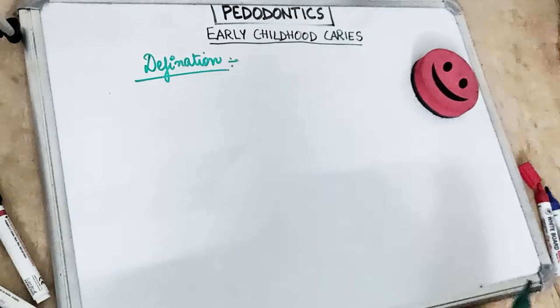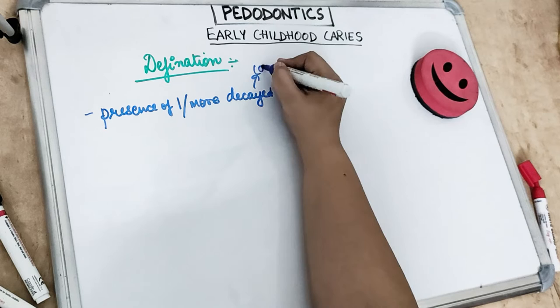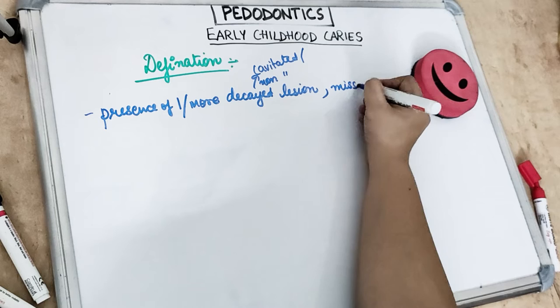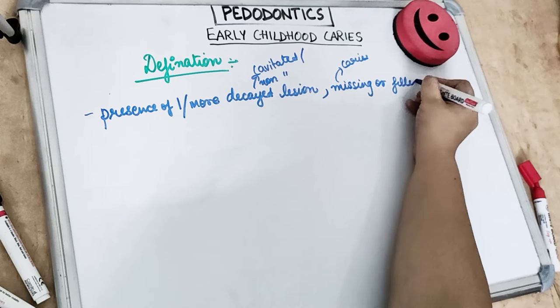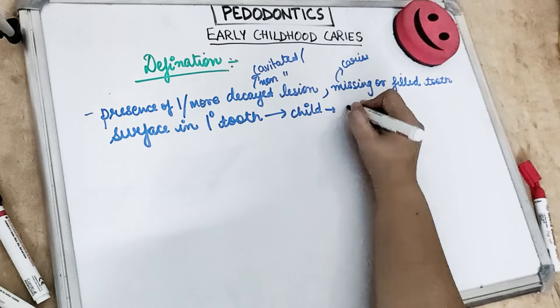Coming to the definition of early childhood caries: it is defined as the presence of one or more decayed teeth, which can be a cavitated lesion, any non-cavitated lesion, or missing teeth — whether missing due to caries or any filled tooth surface present in any primary tooth.